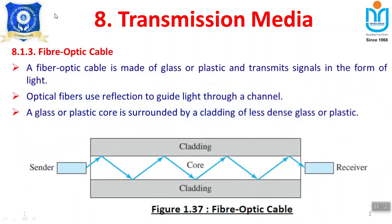Fiber optic cable is made of glass or plastic and transmits signals in the form of light. Twisted pair and coaxial cable use electric signals, but fiber optic uses light. The signal will be in the form of light, which transmits in a very fast manner compared to ordinary signals. Light signals traverse faster by means of refraction, and optical fibers use reflection to guide the light through a channel.